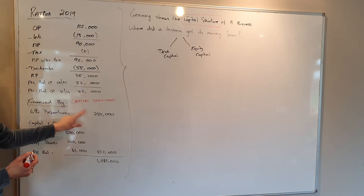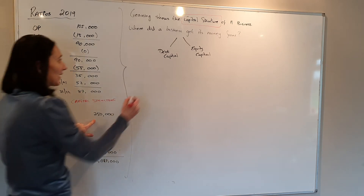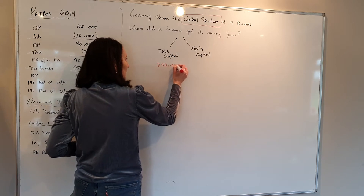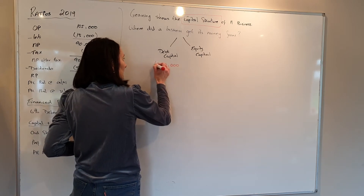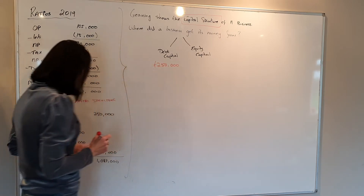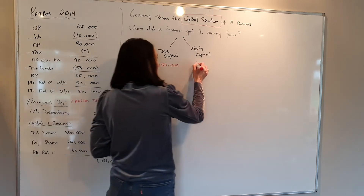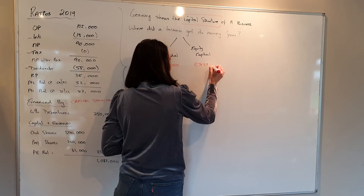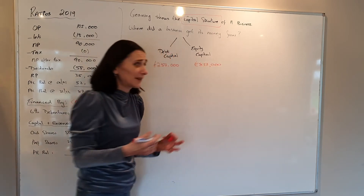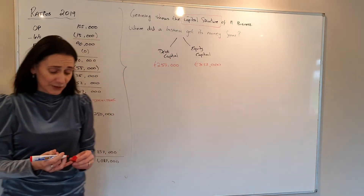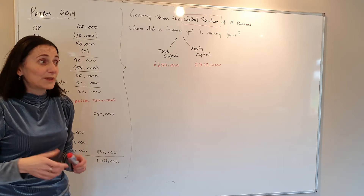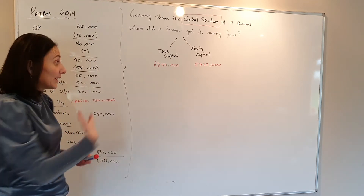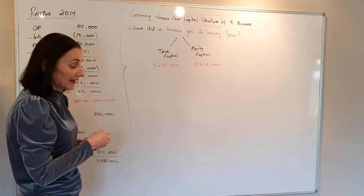In this scenario, the business has debt capital — they borrowed 250,000 — and the amount they've put in themselves is 837,000. From a real-world point of view, you would say that the owners of this business really believe in it because they put in so much money themselves.